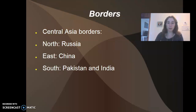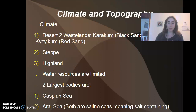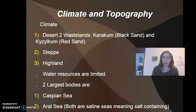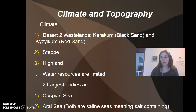The borders of Central Asia include Russia to the north, China to the east, and Pakistan and India to the south. The climate is desert for one — there are two major deserts in this area: the Karakum, which means 'black sand,' and the Kizilcum, which means 'red sand.' It also has steppe climate as well as highland climate.